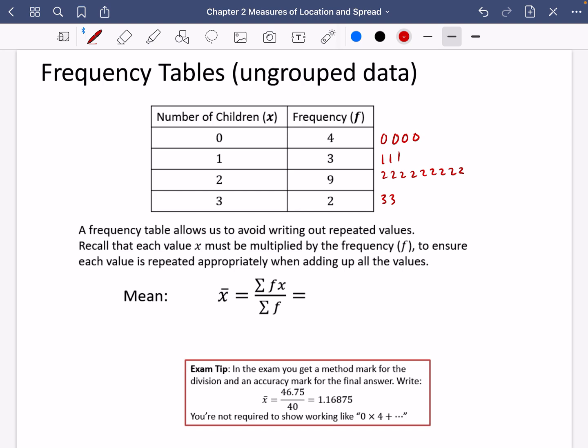So it's kind of boring to have to write out all of those values. So recall that each value x must be multiplied by the frequency in order to show that each value is repeated appropriately when adding up all the values.